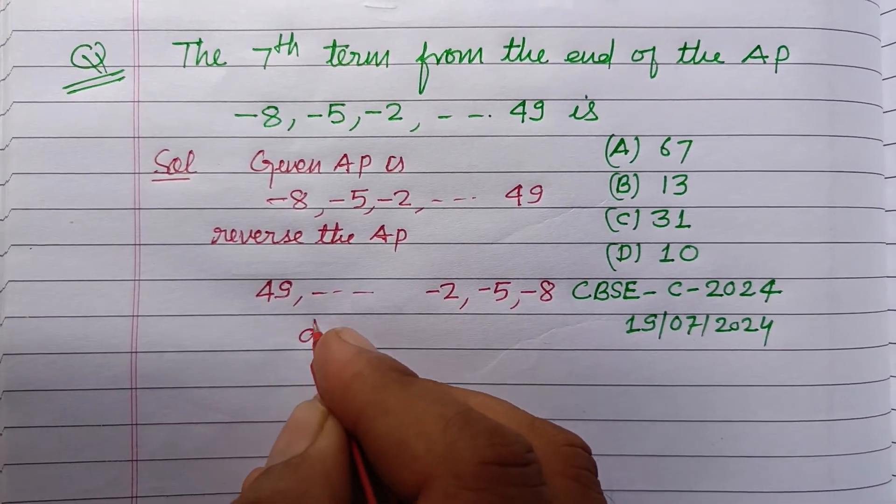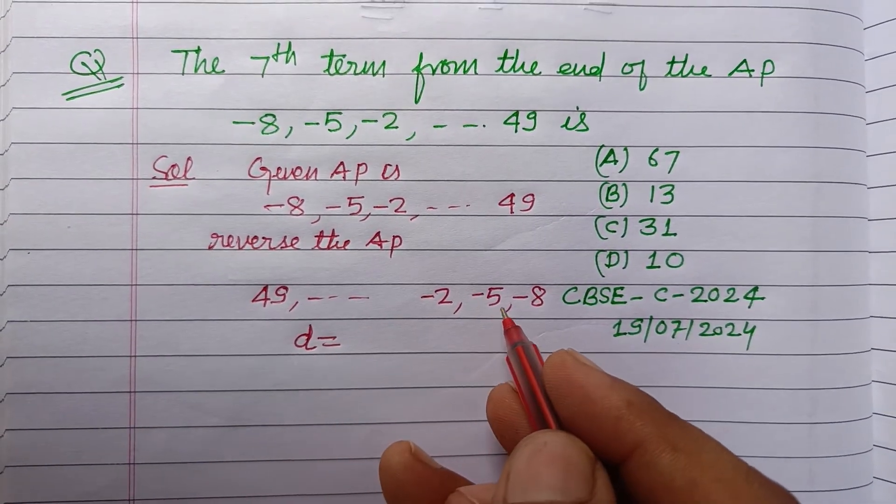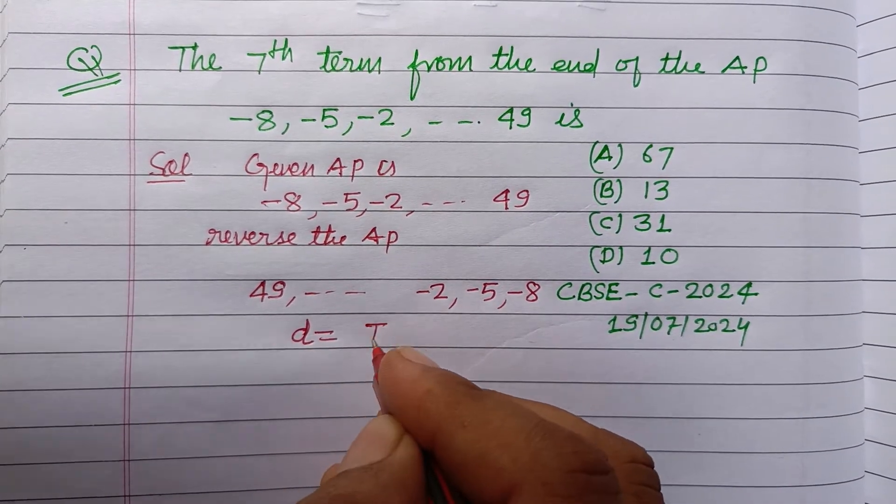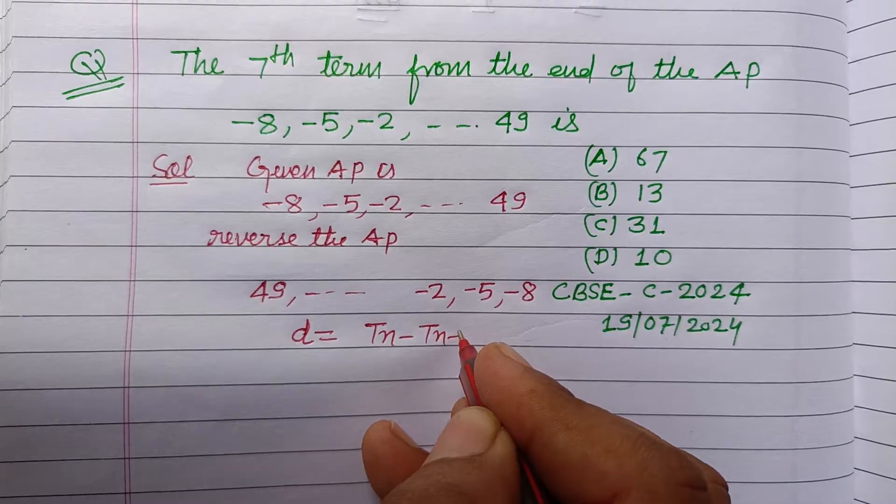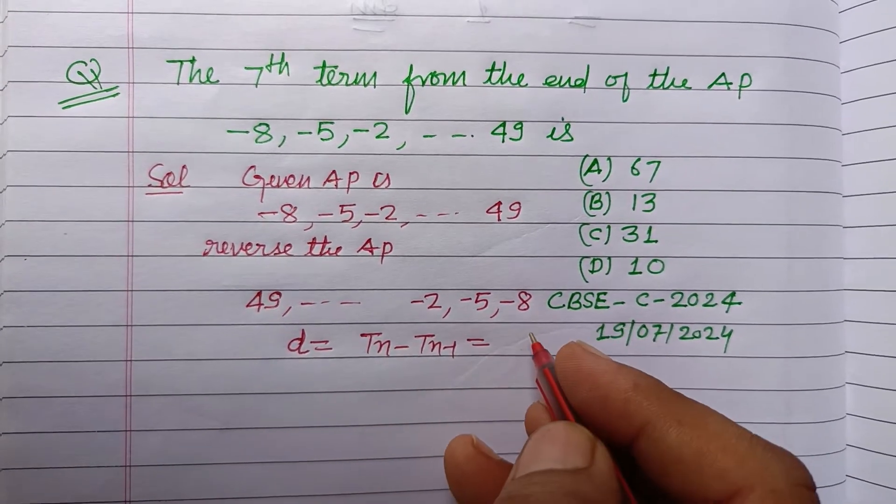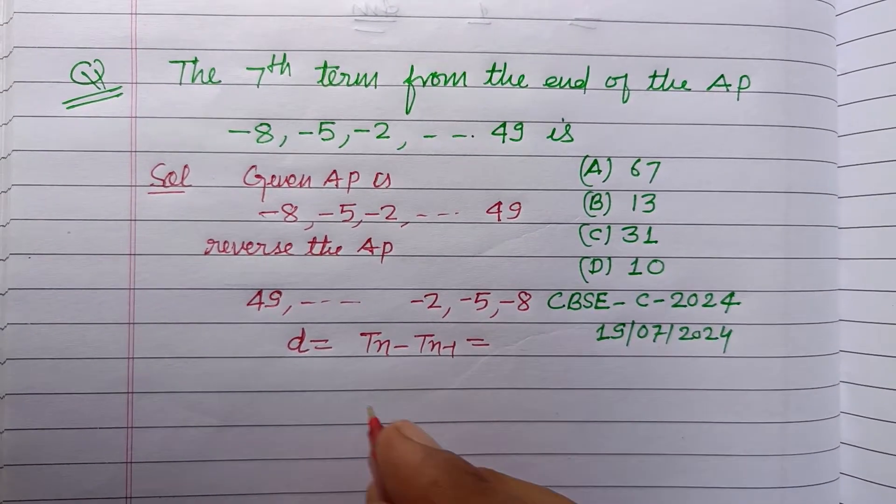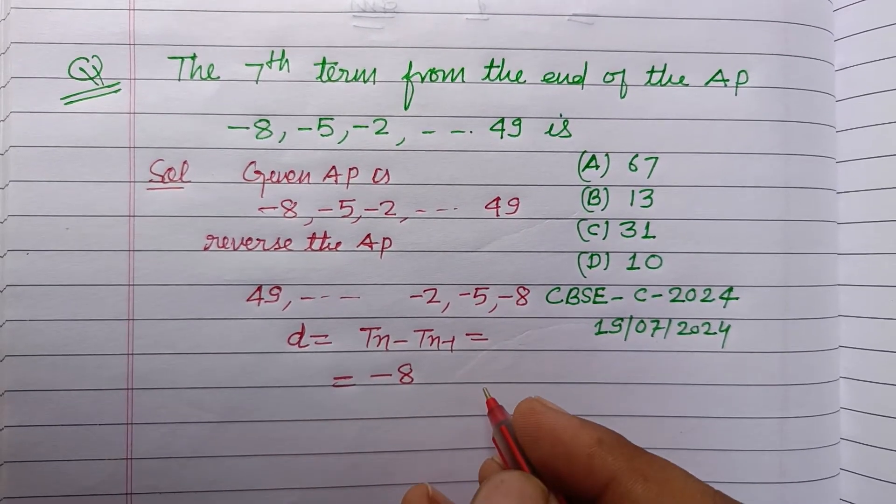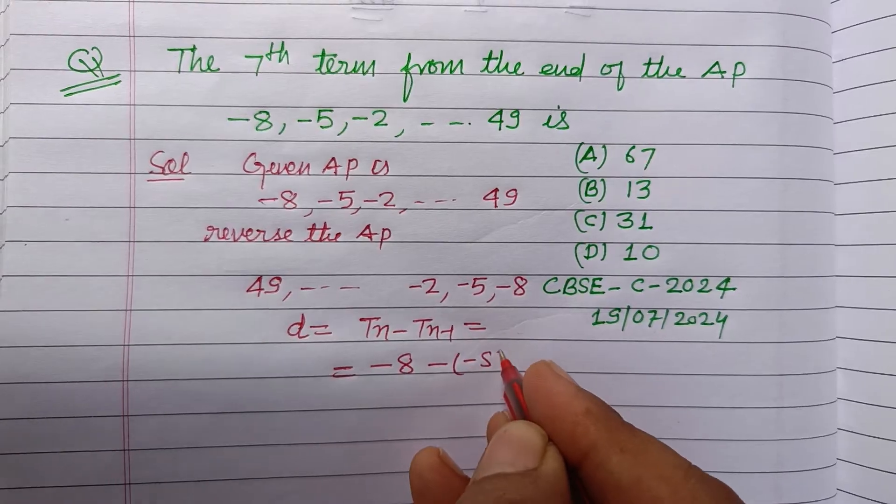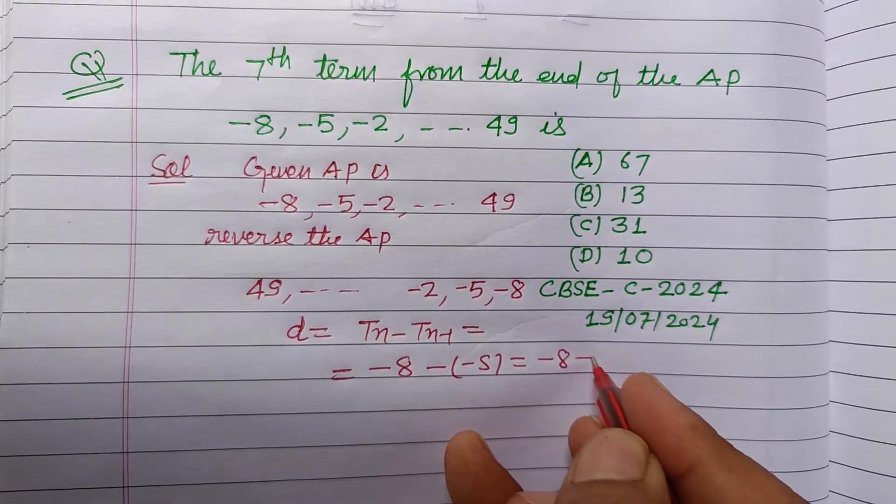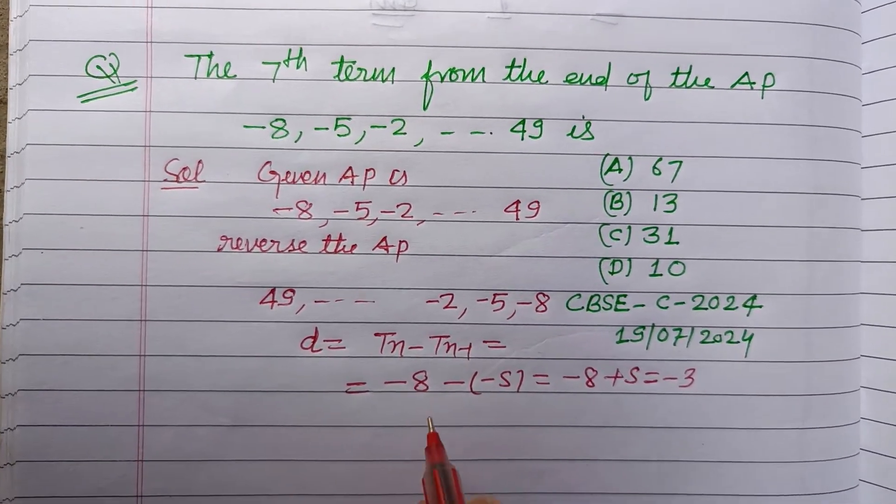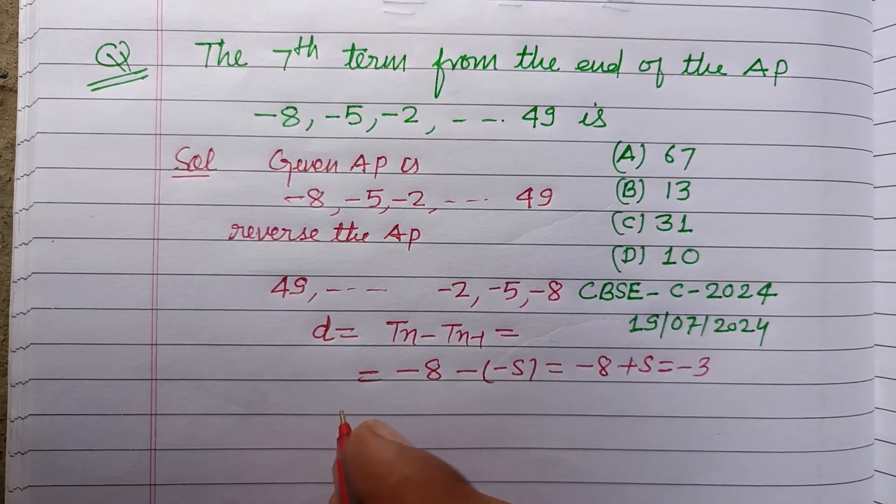Now, common difference D is Tn minus Tn minus 1, or this is minus 8 minus minus 5. So minus 8 plus 5, that is minus 3. So here, common difference is minus 3.